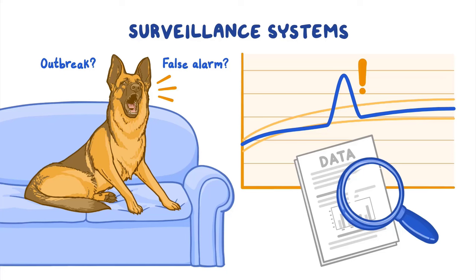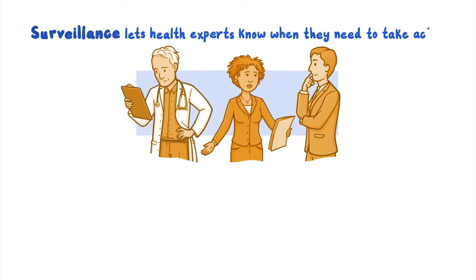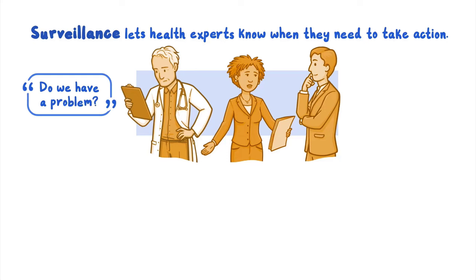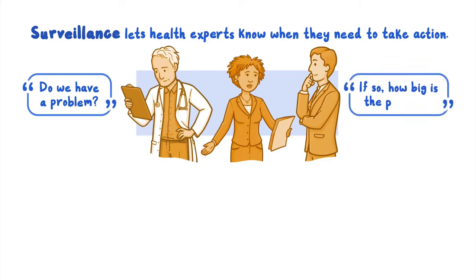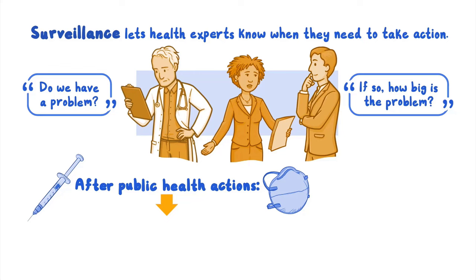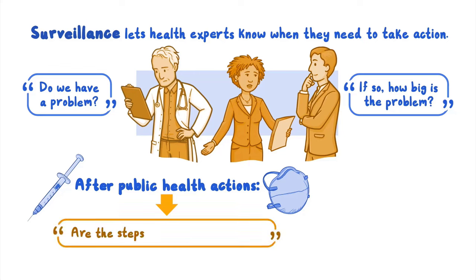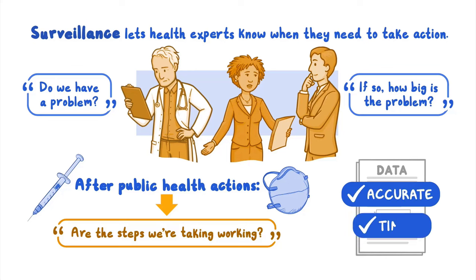In setting up a surveillance system, it is important to first determine its purpose and goals. One main reason to do surveillance is to let health experts know when they need to take action. Surveillance data provides answers to questions like: do we have a problem, and if so, how big is the problem? After taking public health actions to address the problem, surveillance data can also answer: are the steps we're taking working? So the data must be accurate and timely.